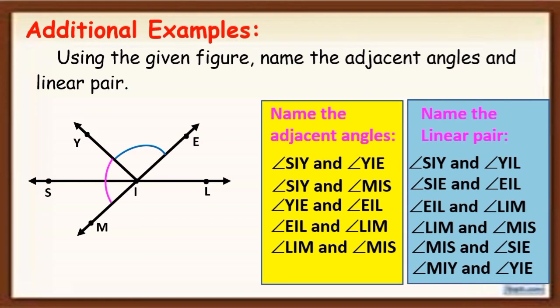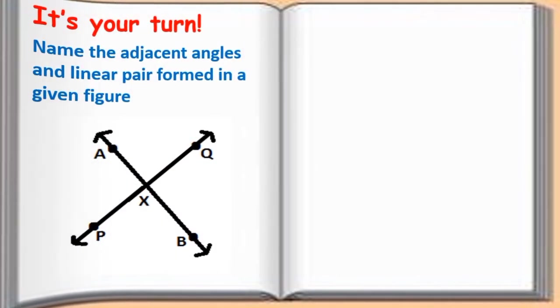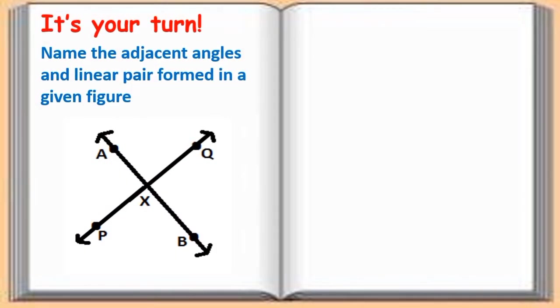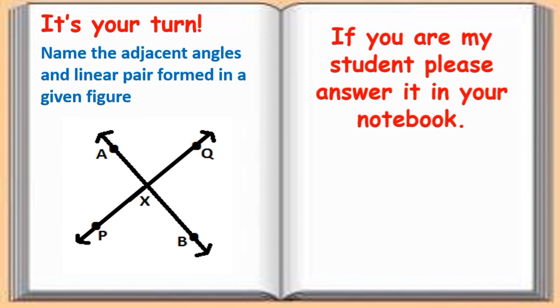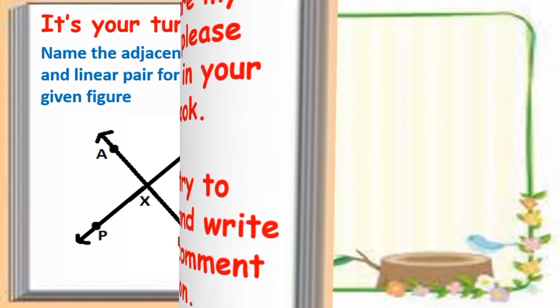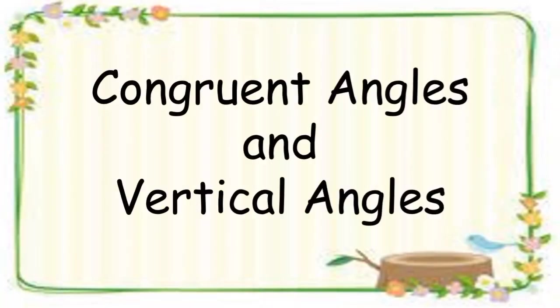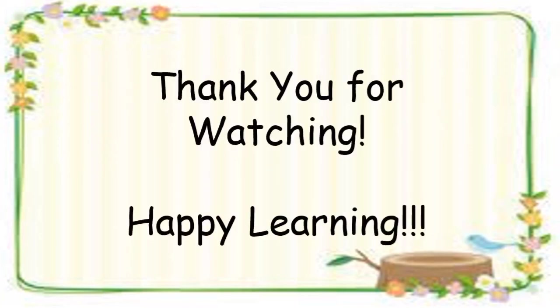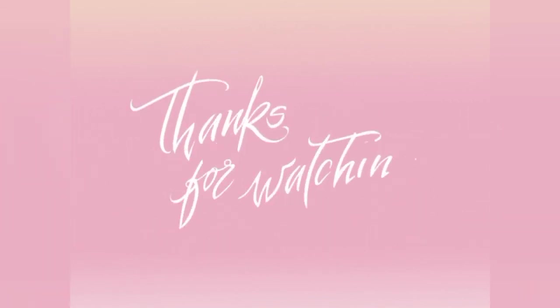So that covers linear pairs and adjacent angles. Now it's your turn — name the adjacent angles and linear pairs formed in the given figure. If you are my student, please answer it in your notebook. If not, try to answer it and write it in the comment section. Next lesson: congruent angles and vertical angles. Thank you for watching and happy learning, everyone!